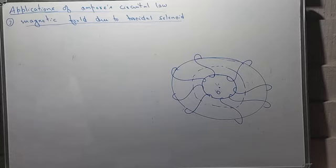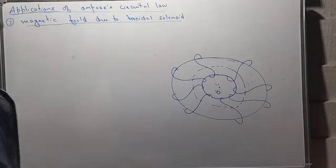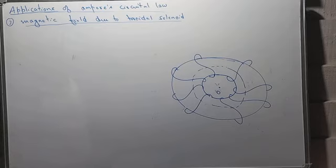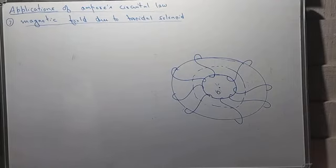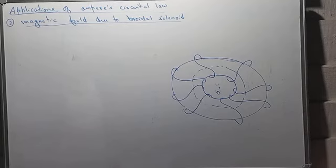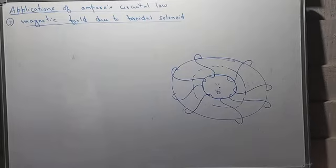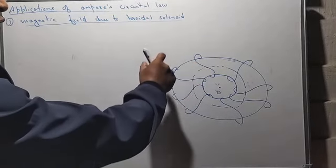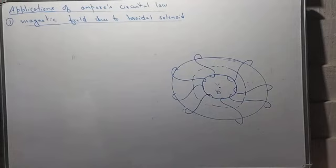This is the third application of Ampere's Circuital Law, and in this application we shall study about the magnetic field due to a toroidal solenoid. A toroidal solenoid is actually a solenoid which is bent in the form of a circle — a solenoid bent in the form of a ring is called a toroidal solenoid.